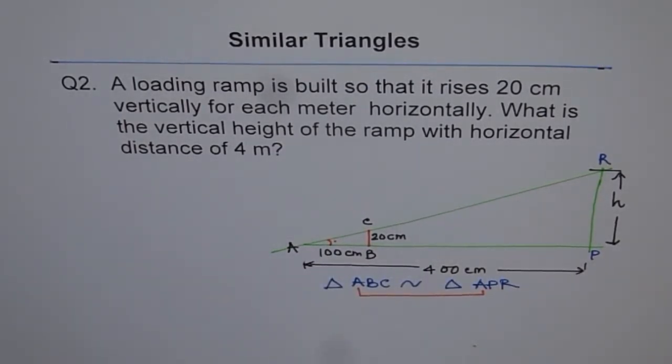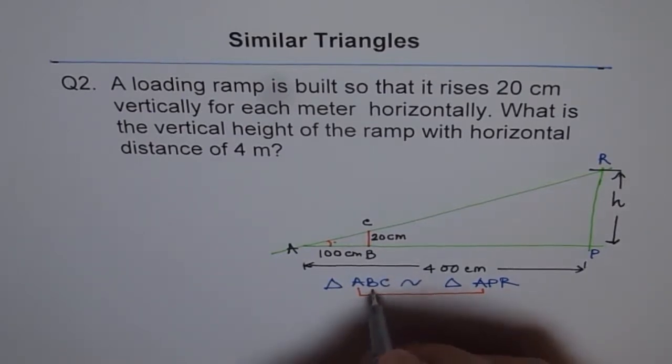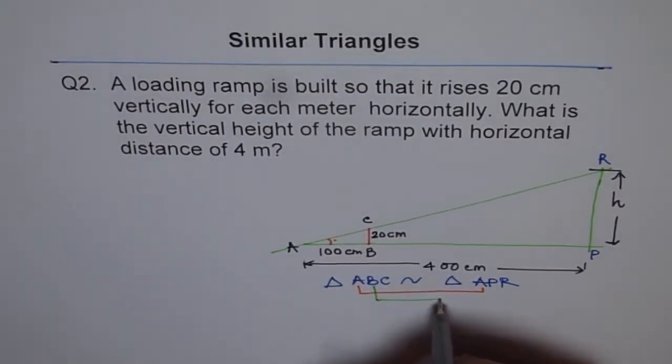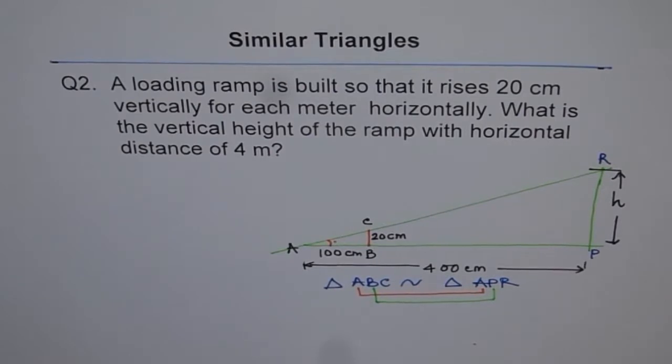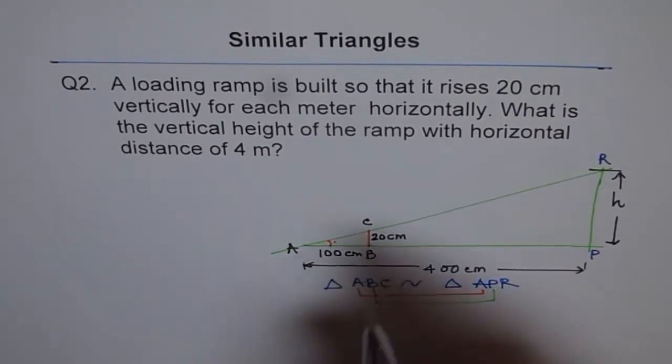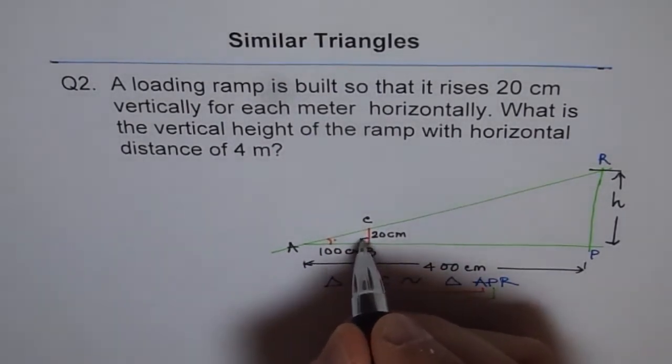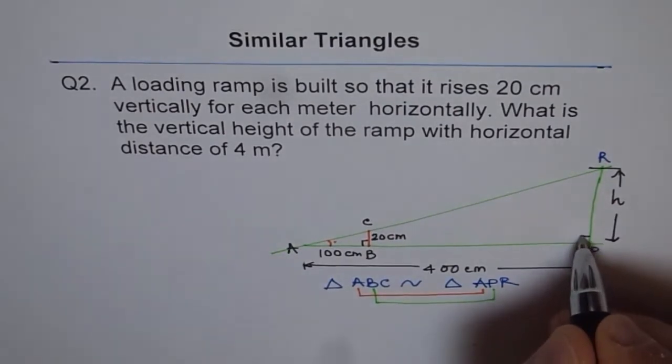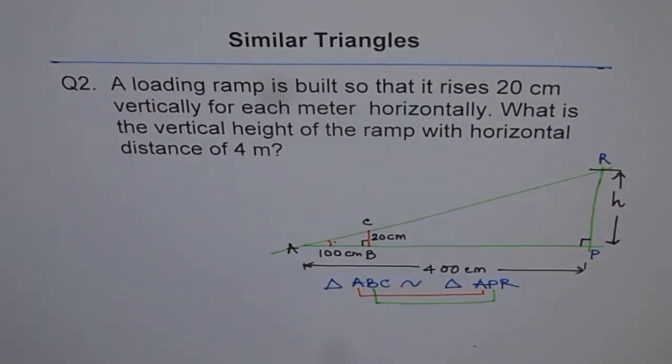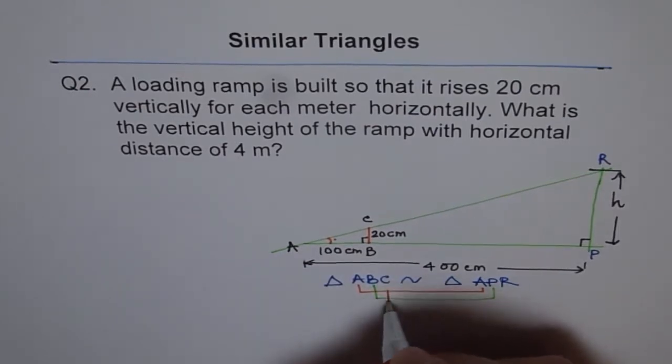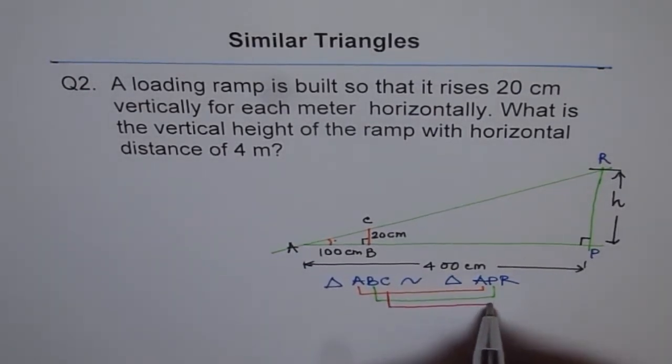And second, angle B is equal to angle P. Are they the same? Angle B in this triangle is 90 degrees. So they are also the same. So at least two angles are the same. Third has to be the same. Why? Because sum of angles is 180 degrees and then C is same as R.